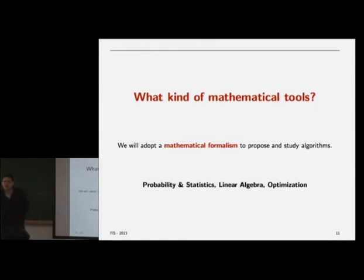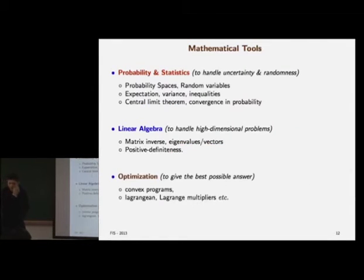What kind of mathematical tools will we use? We will adopt a mathematical formalism based on probability statistics, linear algebra, and a bit, just a bit, a hint of optimization. I think most of the optimization ideas that we provide will be self-contained in the course, so you shouldn't worry too much. But we will use just very basic concepts of probabilities: expectation, variance, inequalities, maybe some convergence, some bounds, especially in the statistical learning part. Linear algebra will be everywhere. I think you're all pretty knowledgeable in that. And then, optimization.